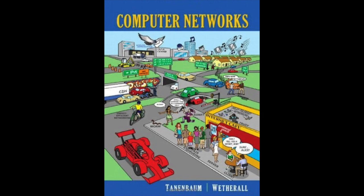The first four socket primitives—SOCKET, BIND, LISTEN, ACCEPT—are executed in that order by servers. The SOCKET primitive creates a new endpoint and allocates table space for it within the transport entity. Its parameters specify the addressing format, the type of service desired (for instance, reliable byte stream), and the protocol. A successful socket call returns an ordinary file descriptor. Newly created sockets do not have network addresses; these are assigned using the BIND primitive. The reason for not having the socket call create an address directly is that some processes care about their addresses while others do not.